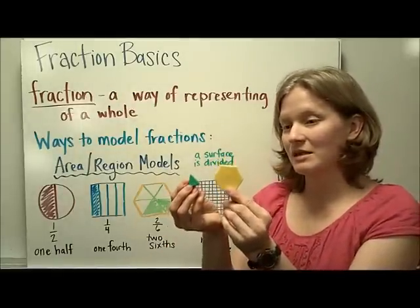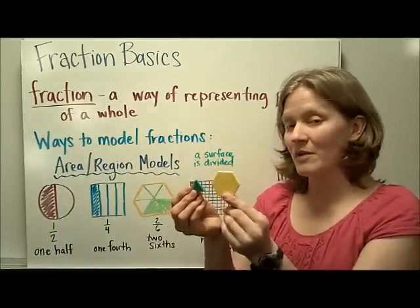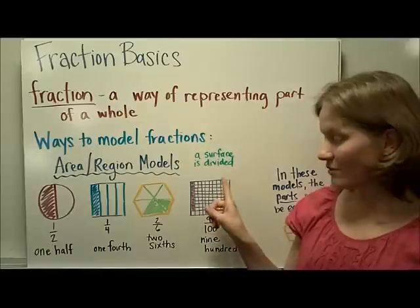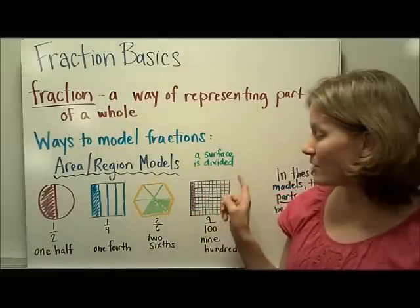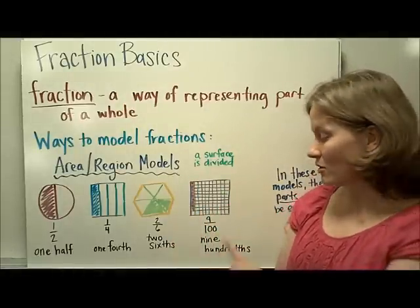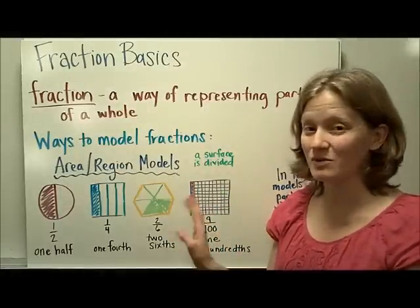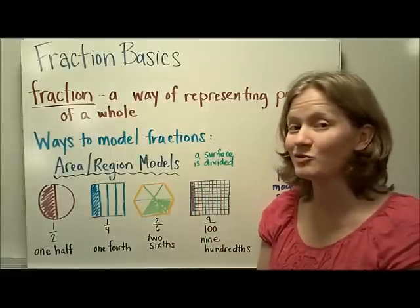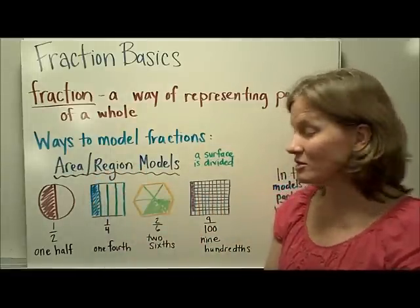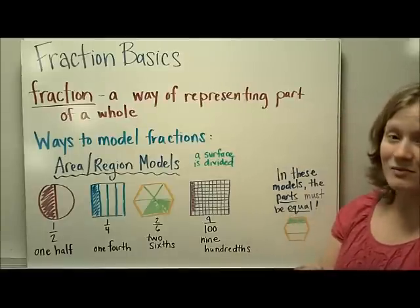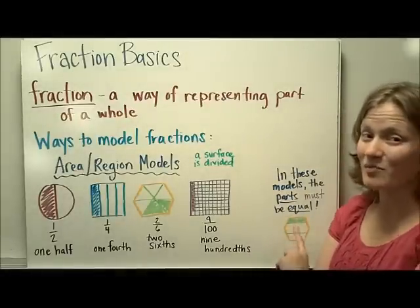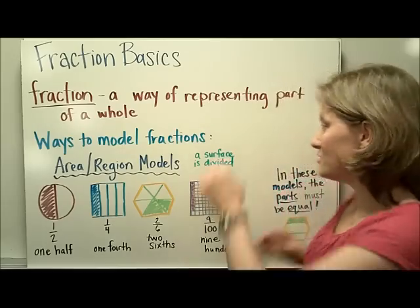We will use pattern blocks like this in class to model area fractions with the hexagon. And finally, when we use the base ten model of the flat, if you color in nine of those, you could call that nine hundredths because we know that this is broken up into a hundred pieces. It's important to remember when you're talking about the area and region models that all parts must be equal. You would not consider this a good example of a fraction because the parts are not equal sizes and shapes.